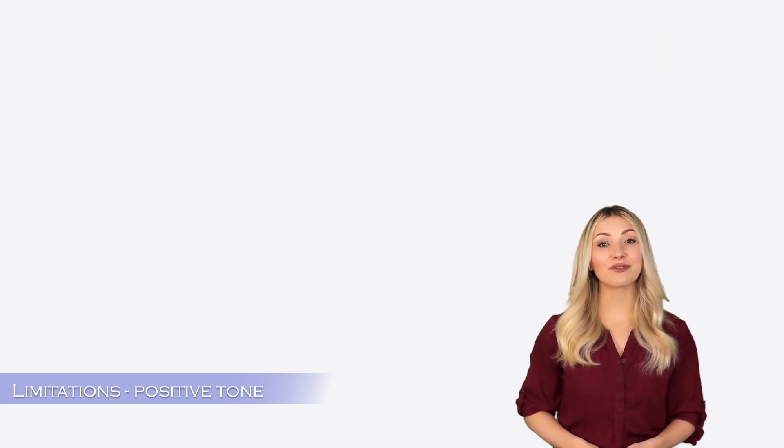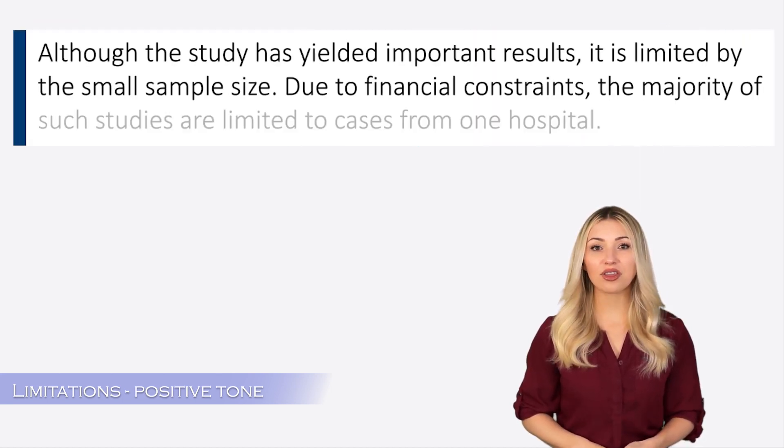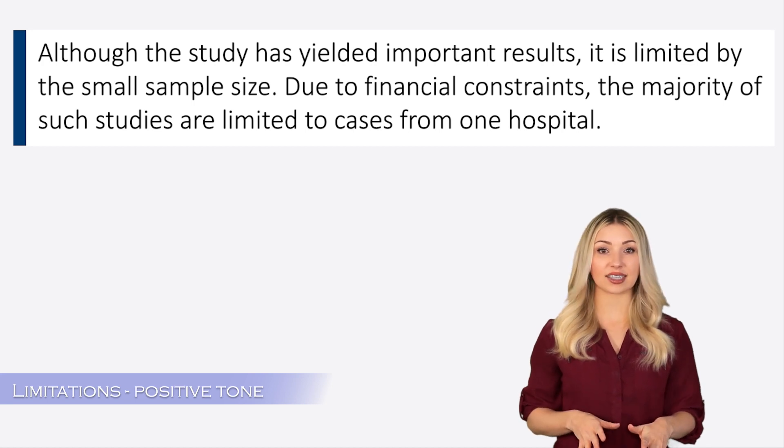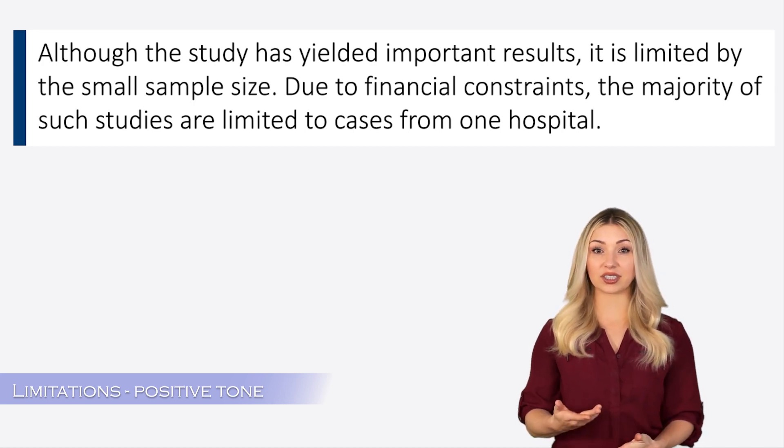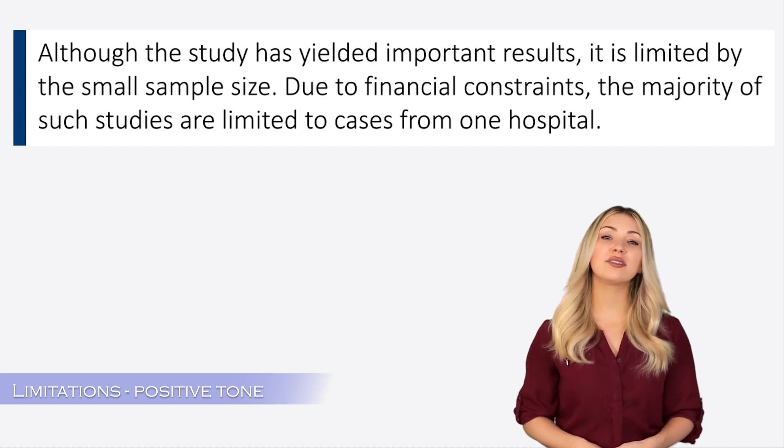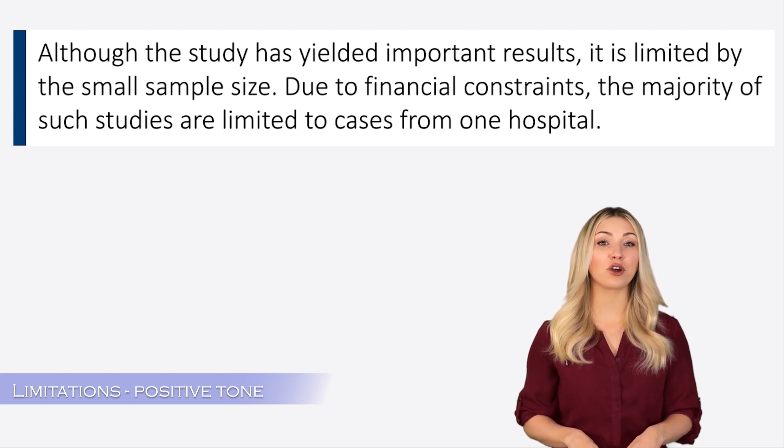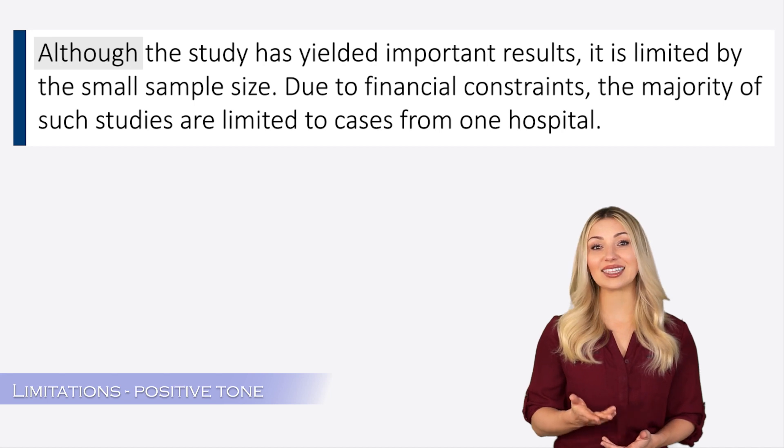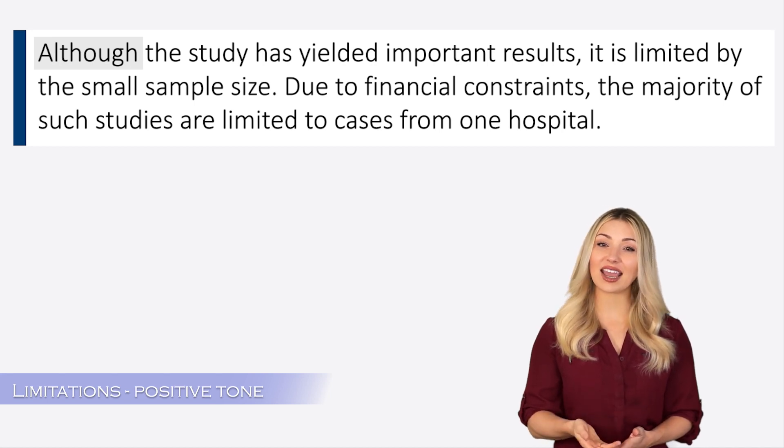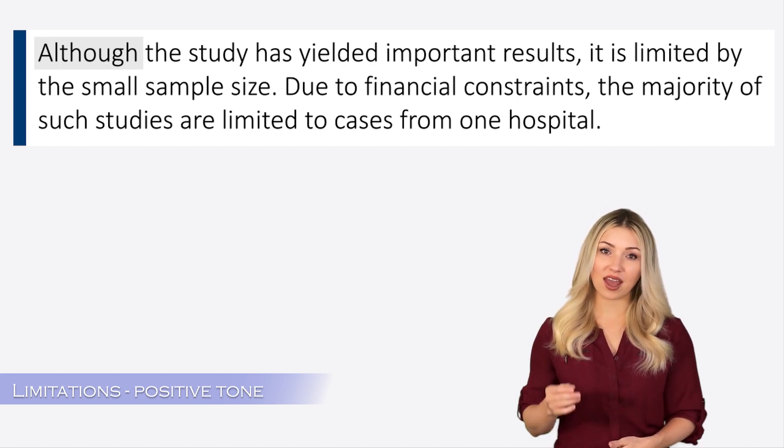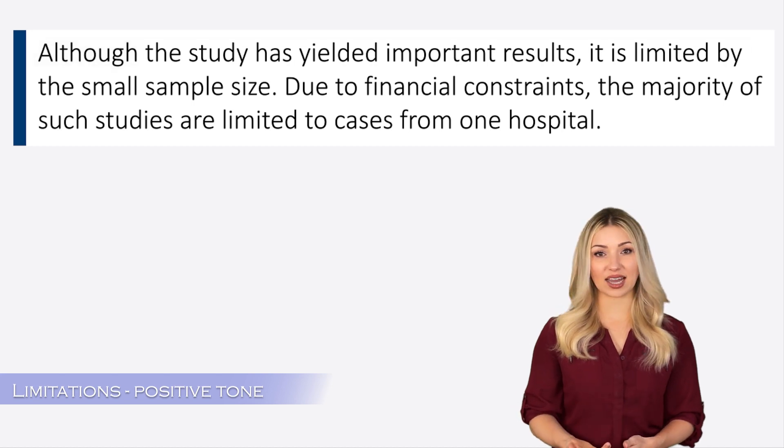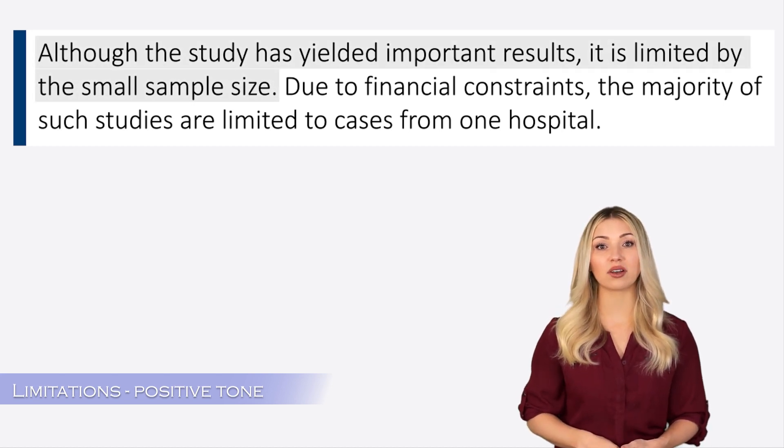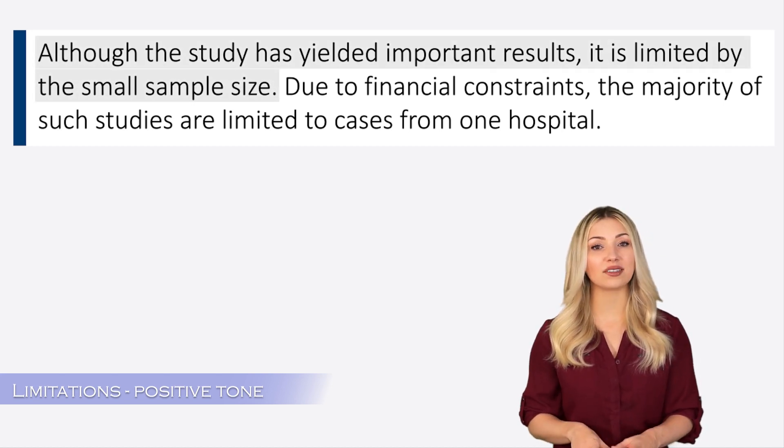Here is a slightly different way of presenting the same limitations. The authors have used some clever tactics here to make the limitations sound more positive. You can see that the author has used the adverb, although, at the start of the sentence. So this immediately tells the readers that something negative is about to follow. They are saying that although the study has yielded very important results, the sample size is a bit small.